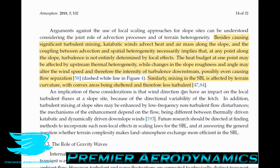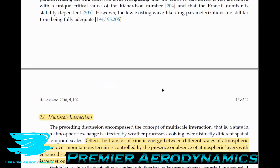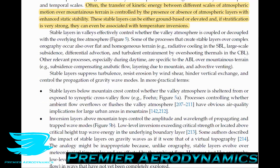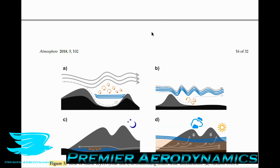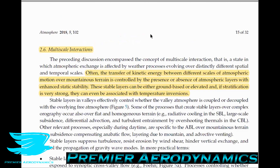In figure four, flow separation is shown over a small bump — the flow goes downhill, hits a bump, separates just like over a regular surface, with a recirculation zone before it reattaches. Similarly, mixing in the stable boundary layer is affected by terrain curvature, with convex areas being sheltered and therefore less turbulent. Figure five covers different mountain and boundary layer situations — the stable layers in valleys.